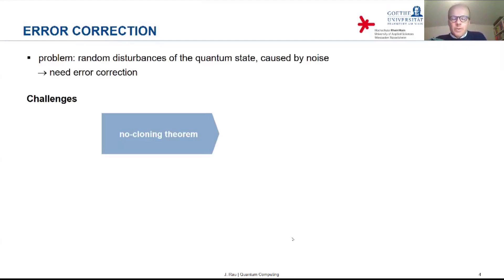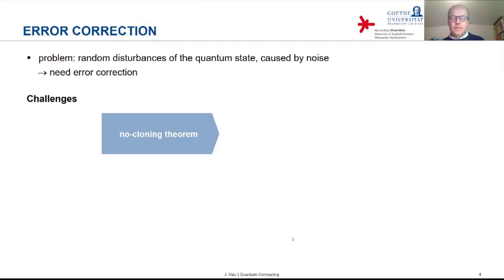The first obstacle is the no-cloning theorem. We discussed that you cannot simply copy the state of a qubit, and so the most straightforward way of adding redundancy — namely simply copying qubit states and sending them multiple times — is ruled out by the no-cloning theorem.